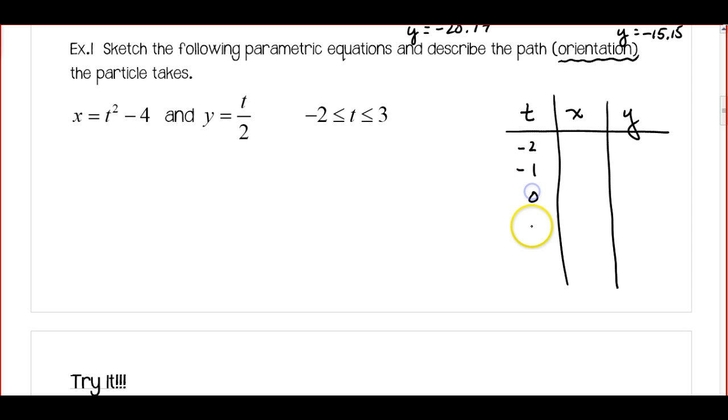And I'm going to pick just some random values. I'm going to do negative 2, negative 1, 0, 1, 2, and 3. So for t equals negative 2, I'm going to substitute that in here for my equation for x. So when I plug that in, I should get 0. And then I'm going to plug it in for y, and I get negative 1.